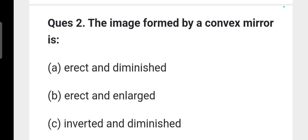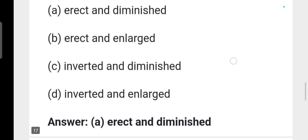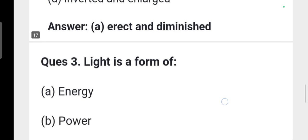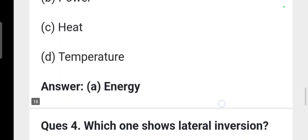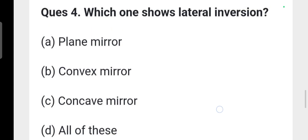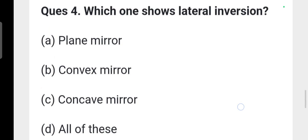Next question: The image formed by a convex mirror is option A, erect and diminished. Top will be seen as top, bottom will be seen as bottom, very small in size. Next question: Light is a form of energy, option A is correct. Next question: Which one shows lateral inversion? Option A, plane mirror is correct.